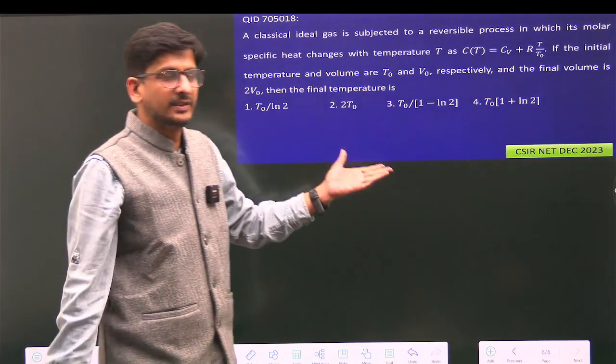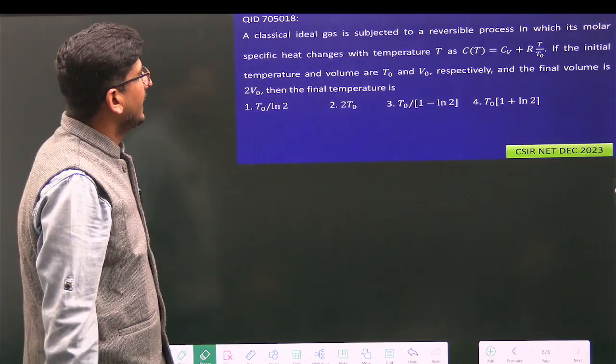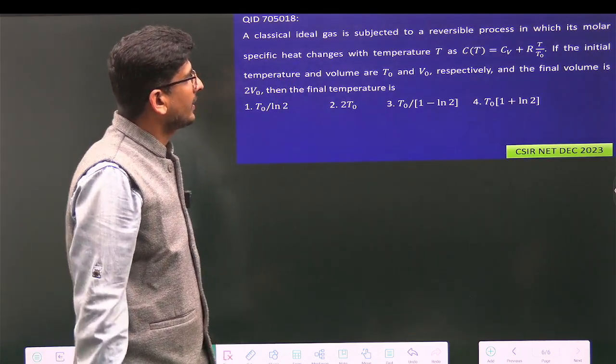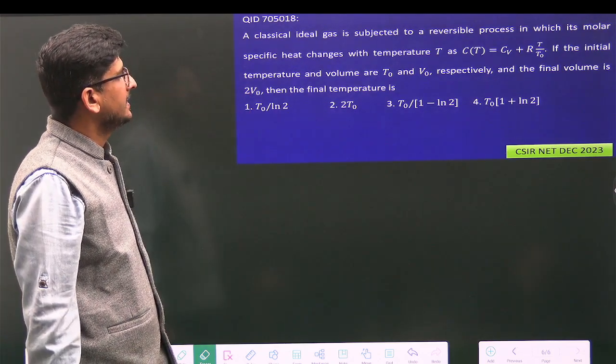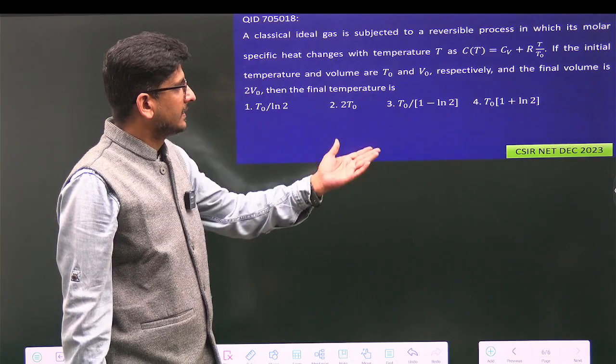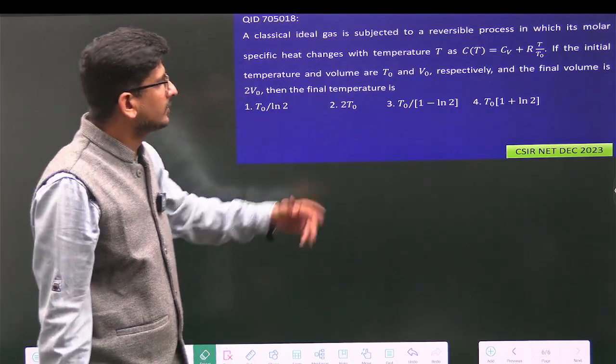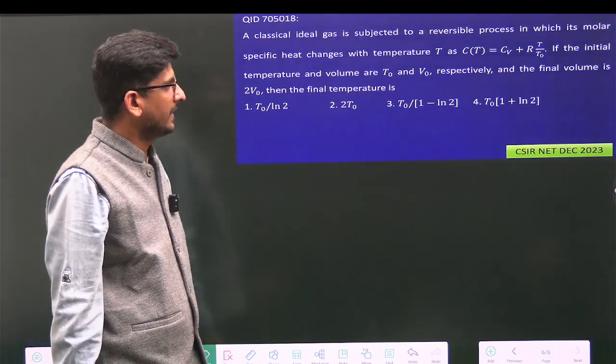Okay, so in this question, a classical ideal gas is subjected to a reversible process in which molar specific heat changes with temperature: C(T) = Cv + RT/T₀. So the profile of molar specific heat is given.